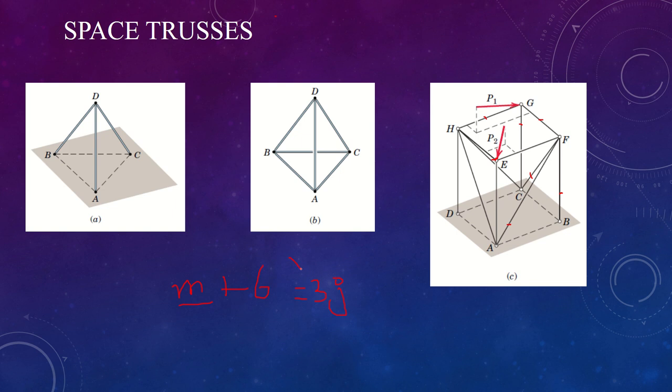If M plus 6 is greater than 3J, there are more members than independent equations, and the truss is statically indeterminate internally with redundant members.